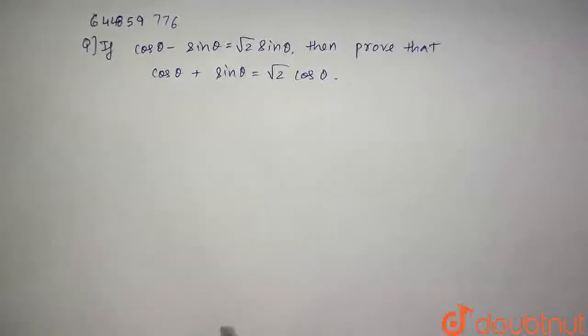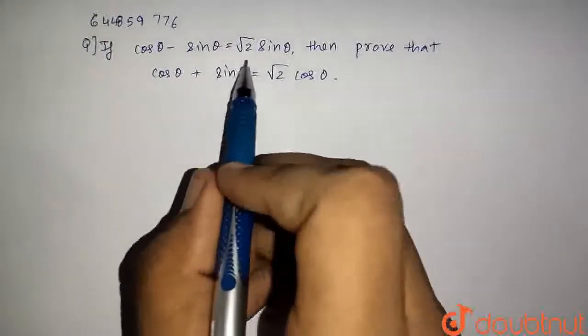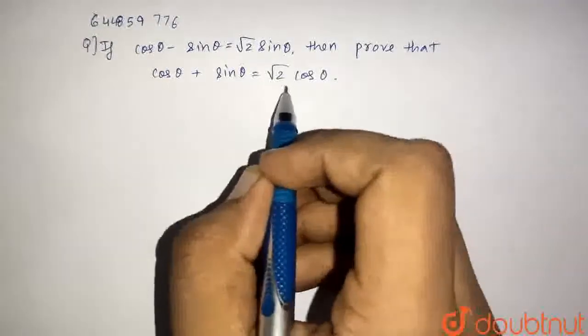Hello students, so the question for today is: we are given if cos θ minus sin θ is equal to root 2 sin θ, then we have to prove that cos θ plus sin θ is equal to root 2 cos θ.